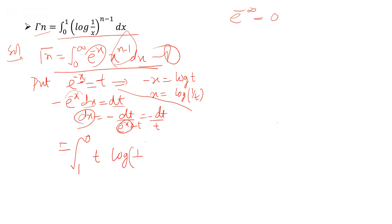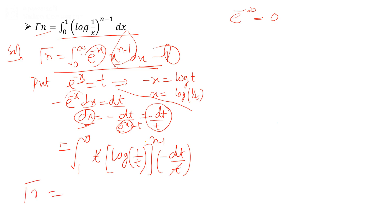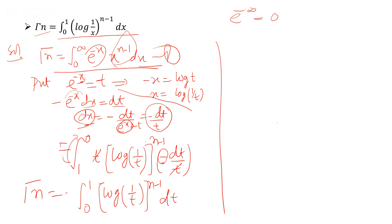Substituting, we get the integral from 1 to 0 of [log(1/t)]^(n-1) times (minus dt/t). The t cancels, and changing the limits from 1 to 0 to 0 to 1 introduces a negative sign which cancels the existing negative. So we get the integral from 0 to 1 of [log(1/t)]^(n-1), dt = Gamma(n). Hence the property is proved.